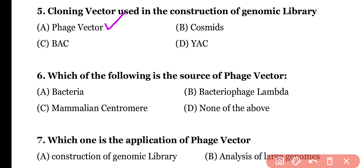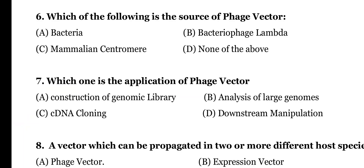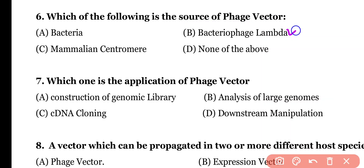Phage vector, especially bacteriophage lambda vectors, is used in the construction of genomic library, so the correct answer is option A. Question 6: Which of the following is the source of a phage vector? Bacteria, bacteriophage lambda, mammalian centromere, or none of the above. Correct answer is option B.